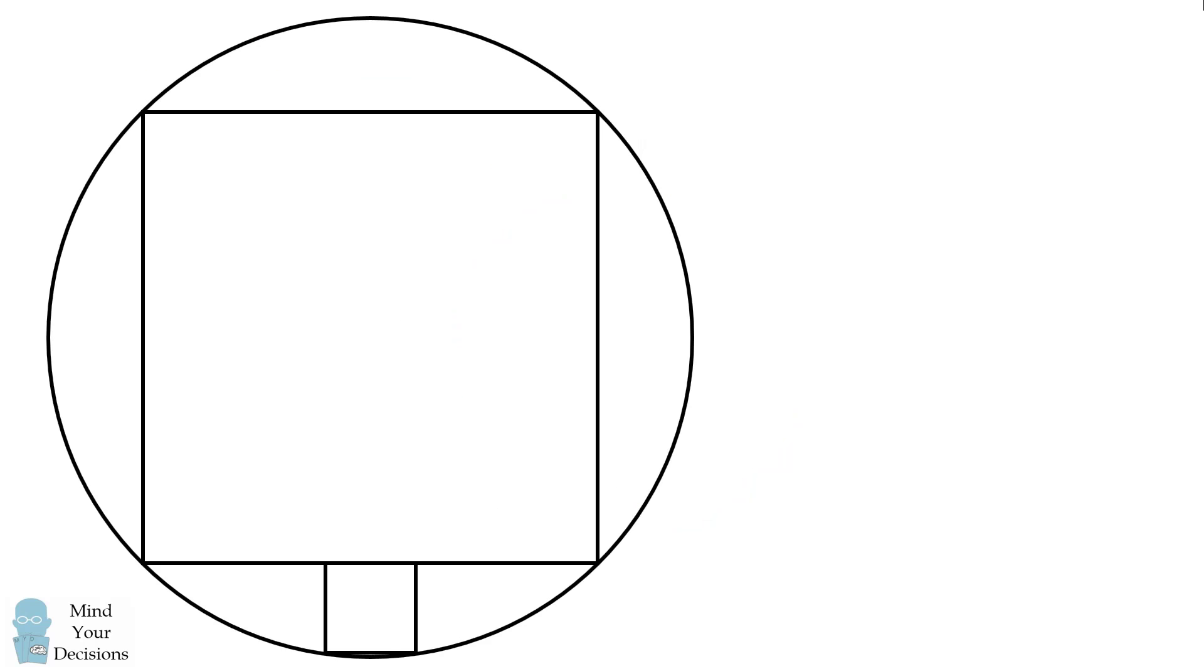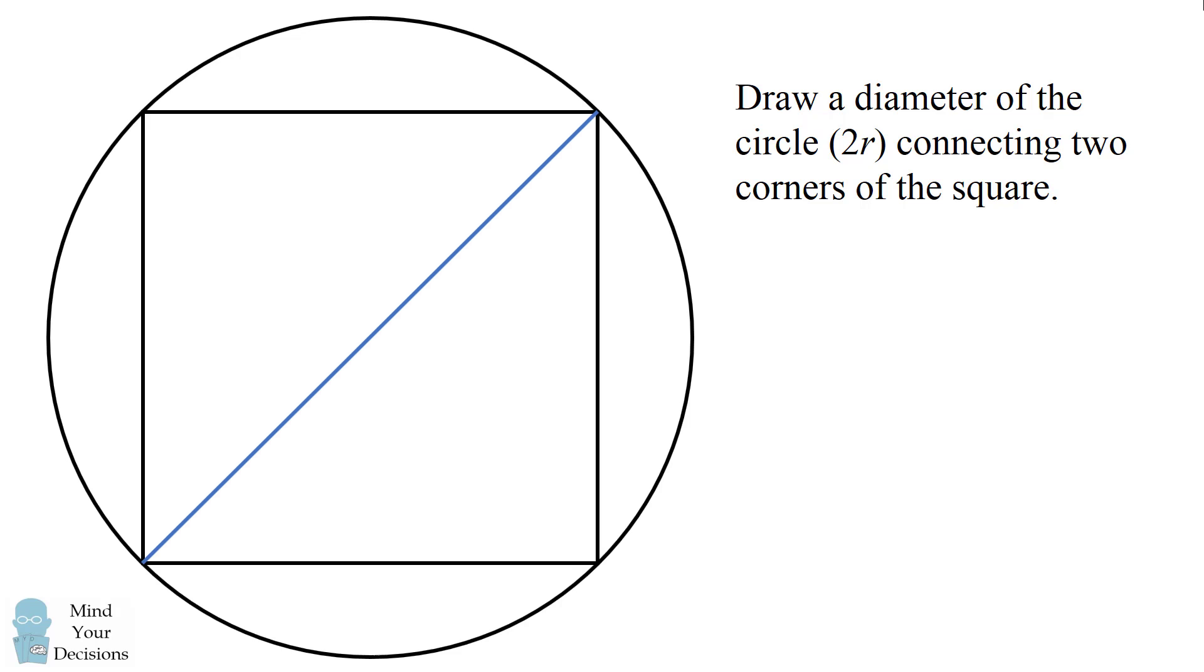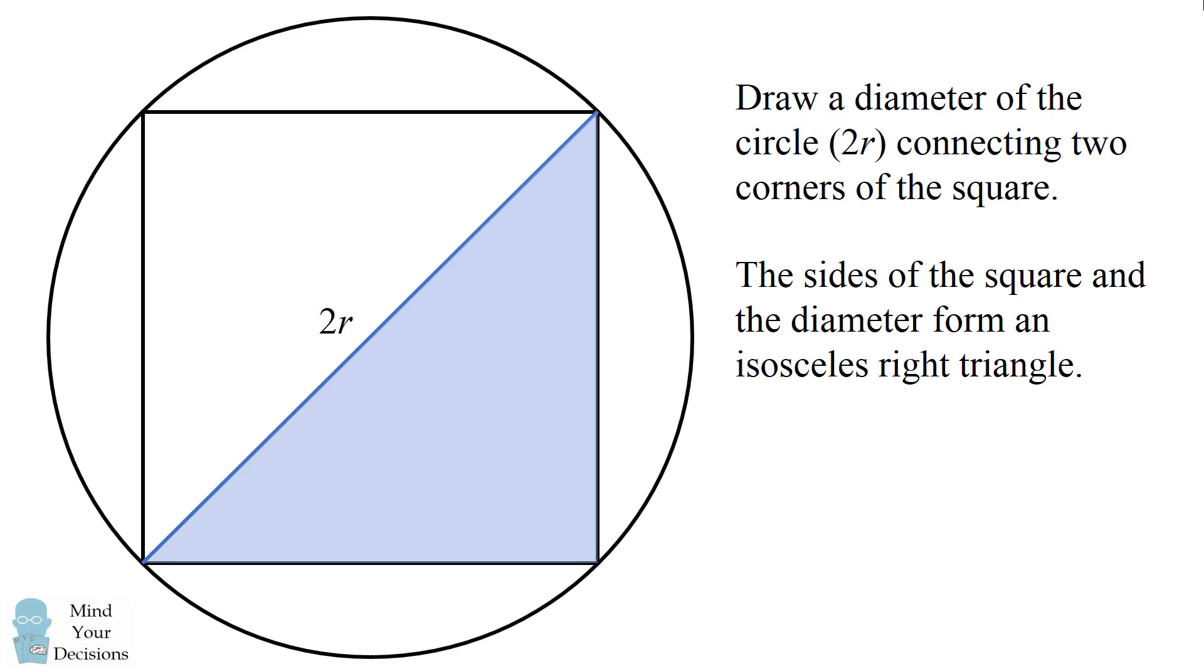Let's first focus on the inscribed square. We'll draw a diameter of the circle that's equal to 2 times the radius that connects two corners of the square. The sides of the square and the diameter form an isosceles right triangle. So we can solve for the large square side length as equaling 2r divided by square root of 2. This simplifies to be r√2.